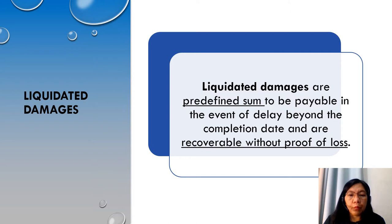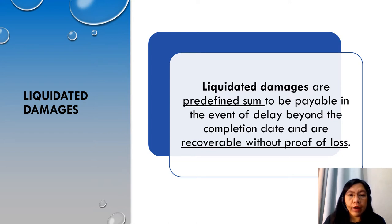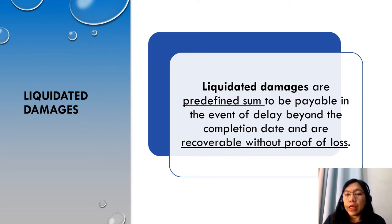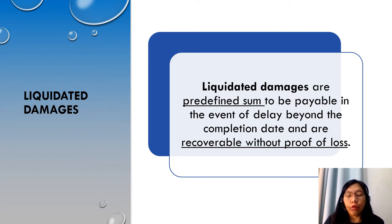Liquidated damages are predefined sums which are payable in the event of delay beyond the completion date, and are recoverable without the need for proof of loss. Liquidated damages are an amount of money agreed upon by the parties at the time of contract signing. The agreed amount usually establishes the damages that can be recovered in the event a party breaches the contract, and this amount is supposed to reflect the best estimate of future damages at the time of contract signing.